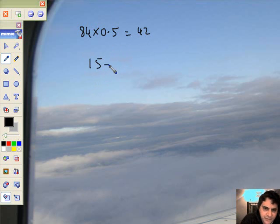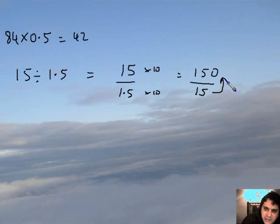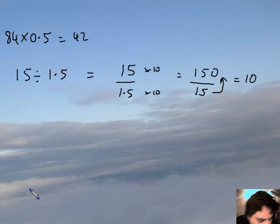Look at this. 15 divided by 1.5. Now look, here's a nice technique. Write it as a fraction, 15 over 1.5. Now look, if we multiply this by 10, top and bottom, we're going to get 150 divided by 15. Now I think you can see that goes in there ever so nicely. The answer's 10. Beautiful, isn't it? So that's a great technique for dividing.